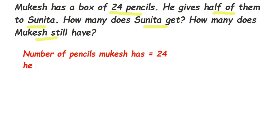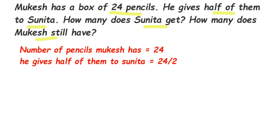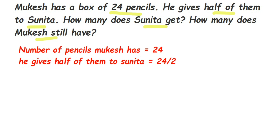He gives half of them to Sunita, which means we have to divide 24 by 2. You can cancel these two numbers — divide 24 by 2. When you divide 24 by 2, you will get the answer 12. Let me show you how we got 12: 2 ones are 2, and 2 twos are 4, so we got the answer 12.